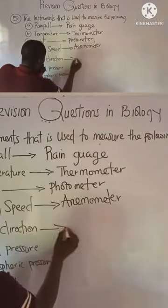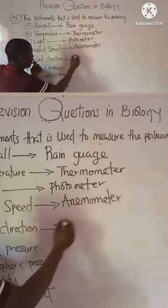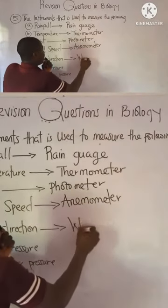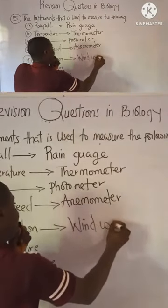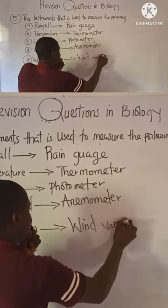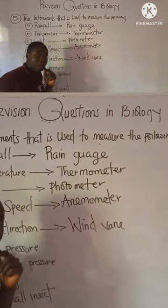But what is the instrument used to measure wind direction? It is basically called the wind vane. This must be noted.